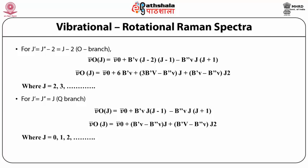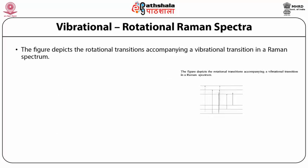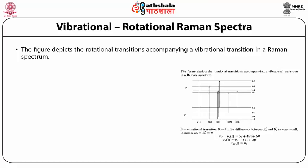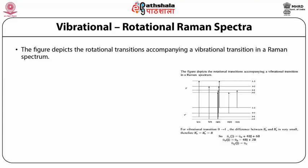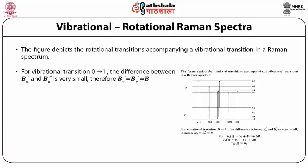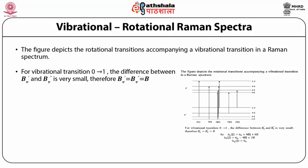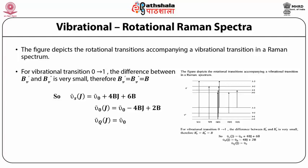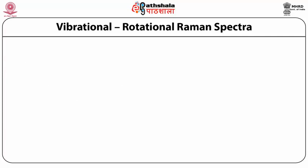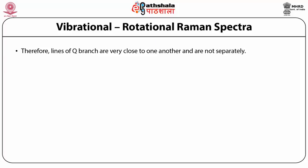Writing J' = J'' = J for the Q branch, the expression can be written accordingly. The figure depicts the rotational transitions accompanying a vibrational transition in a Raman spectrum, showing the corresponding J values 0 to 3 for ν'' and ν'. For vibrational transition 0→1, the difference between B(ν') and B(ν'') is very small; therefore B(ν') = B(ν'') = B. So ν_S(J) = ν₀ + 4BJ + 6B, ν_O(J) = ν₀ − 4BJ + 2B, and ν_Q = ν₀. Therefore, lines of the Q branch are very close to one another and are not separately observed.